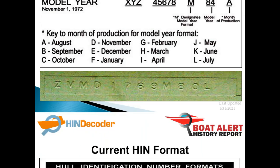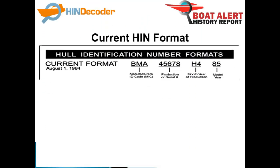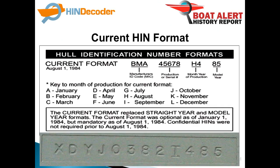The third type is the current HIN format. This HIN always starts with the manufacturer code, then the serial number, then a letter for the month and a single number for the production year. It ends with two numbers for the model year. Here is the legend to show the letter to month conversion. The most common mistake is writing a one instead of letter I, or writing eight instead of letter B.